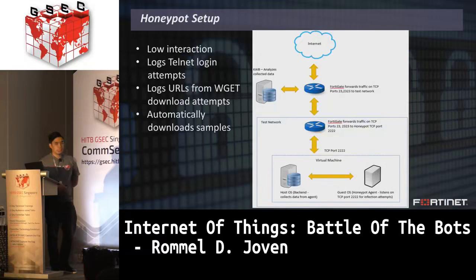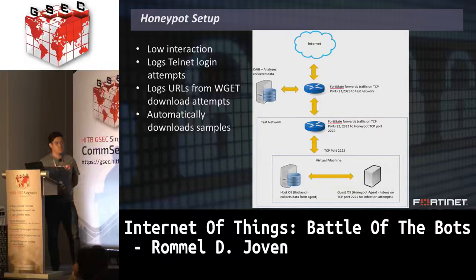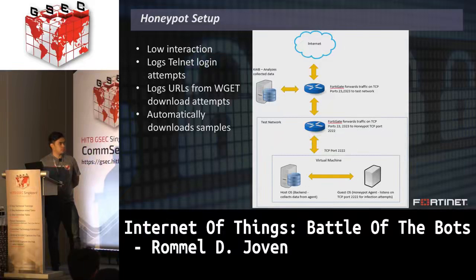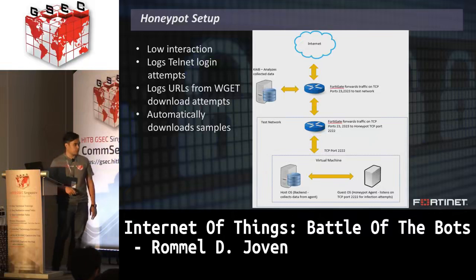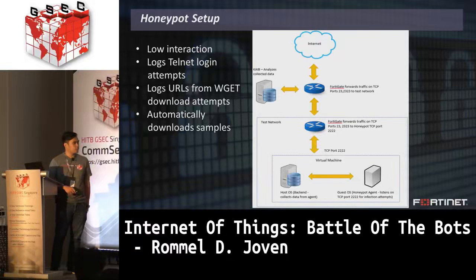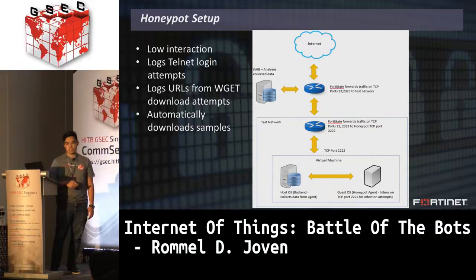Our honeypot uses a low-interaction setup. A FortiGate device faces the internet, routing all traffic on ports 23 and 2323 to our test network. Inside the test network, traffic is directed to a virtual machine with two components: a back end that collects all honeypot data, and the honeypot itself. All gathered samples and download URLs are fed into our KYBE system for analysis.